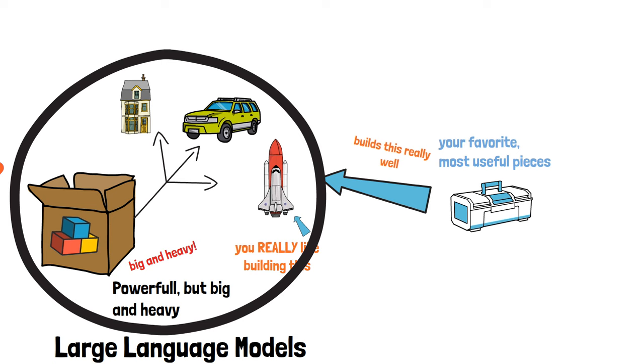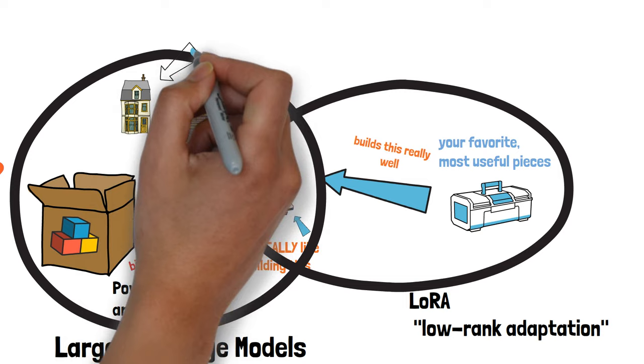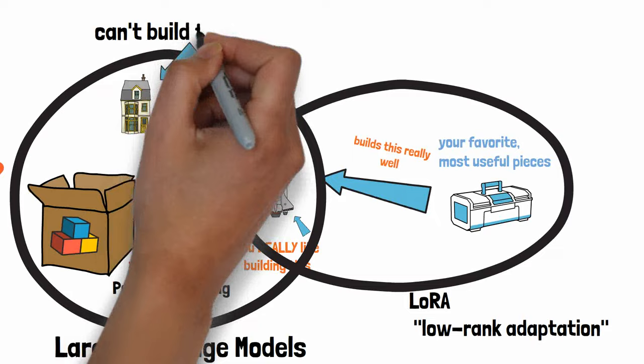The smaller box of Legos is like a low-rank adaptation of the large language model. It's a smaller, lighter version of the model that's been adapted for a specific task. It's not as powerful as the full model. There might be some things that it can't do, but it's more efficient and easier to use.